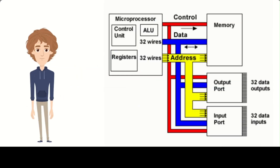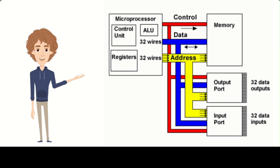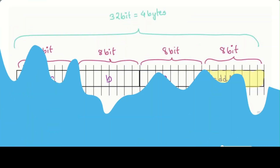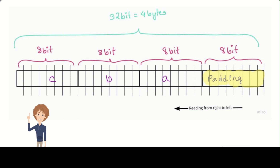Now let's look at a detailed explanation of the data bus. A data bus is a communication pathway that allows different components of a computer system to communicate with each other. It is essentially a collection of wires that carry data from one component to another. Data buses are typically classified based on their width, which refers to the number of wires that make up the bus. For example, a 32-bit data bus has 32 wires, while a 64-bit data bus has 64 wires.